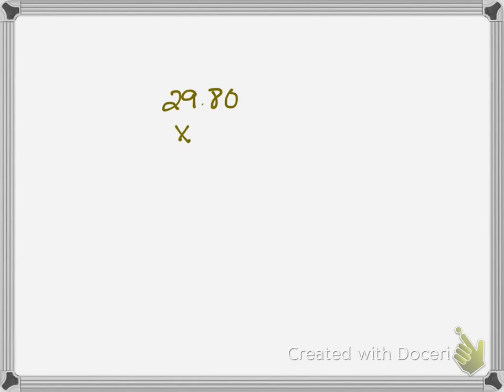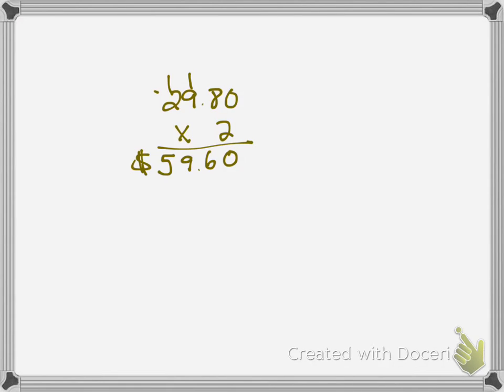$29.80 times 2. 2 times 0 is 0. 2 times 8 is 16. 2 times 9 is 18. Plus 1 is 19. 2 times 2 is 4. Plus 1 is 5. Does that look reasonable? Well, two 30s would be 60. And that's pretty close. So that looks pretty reasonable. And that's probably your solution. Now, again, this isn't multiple choice. But that's a good indication that we're probably on the right track. So let's go back to the word problems.